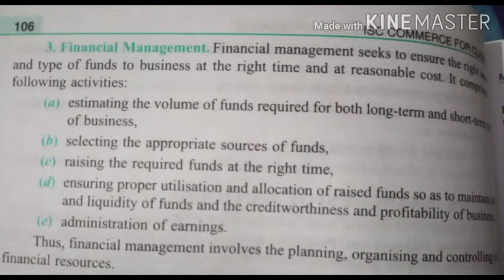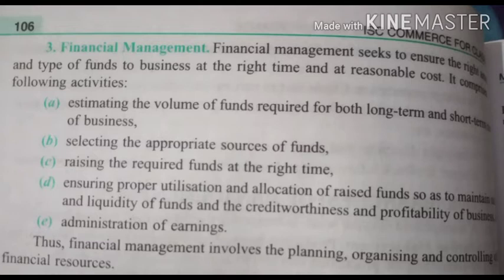The third branch of management is financial management. Financial management means ensuring that investment done in the business is of the right amount, the right type of fund is invested at the right time and at reasonable cost. It comprises the following activities done by financial management.